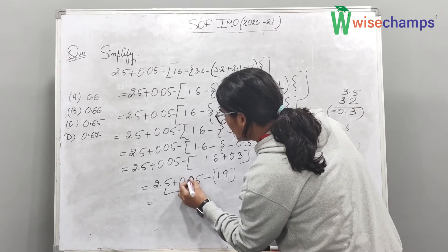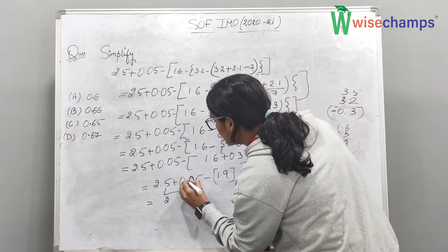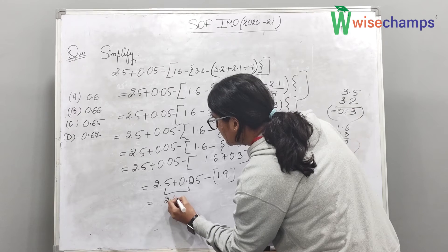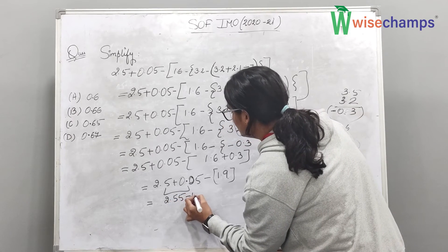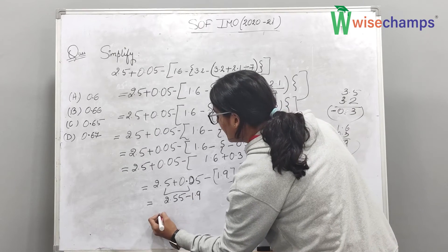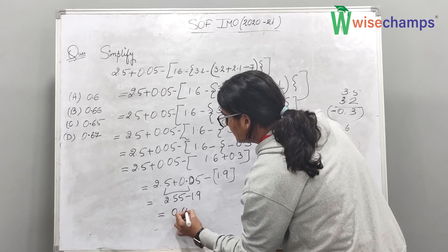So, let's add 2.5 plus 0.05. Then, the answer will be 2.55 and minus 1.9. And the answer will be 0.65.